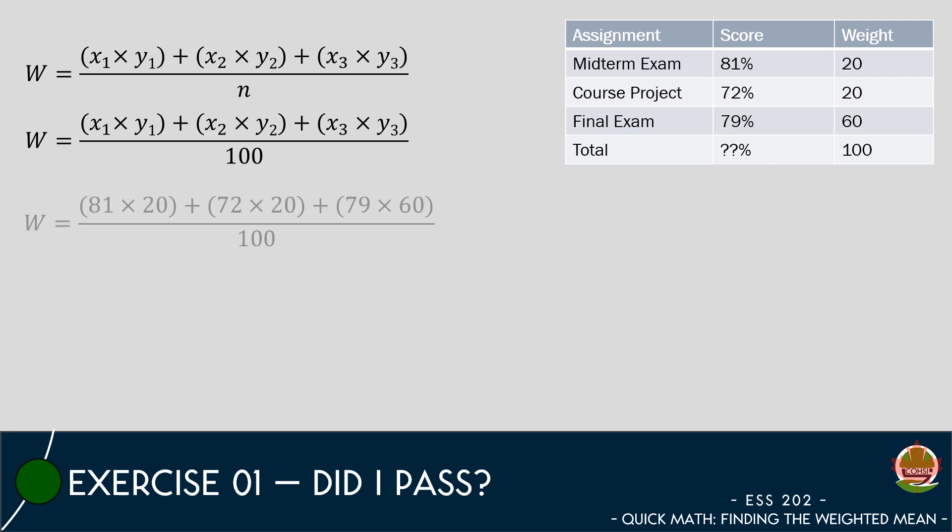We now take the grade from each assignment and multiply it by the weight of the assignment. We add those values together which gives us a value of 7800. We divide 7800 by the perfect score for the class and get a final value of 78. This is our final mark for the class.